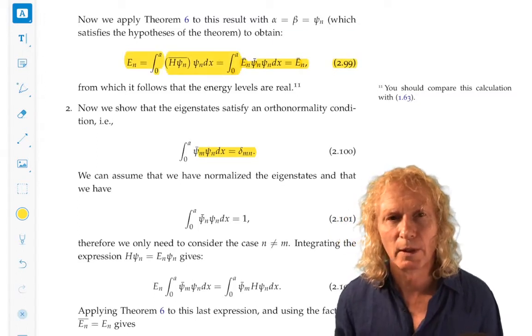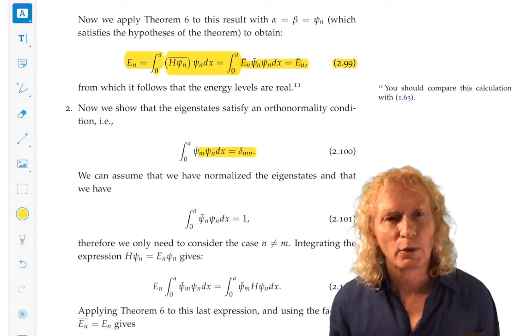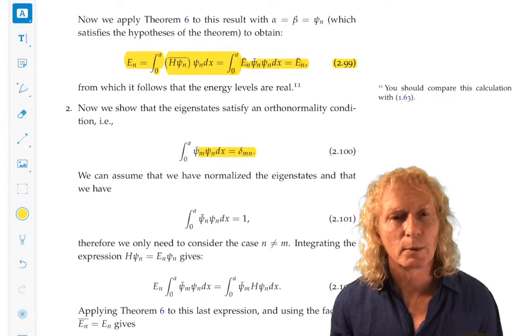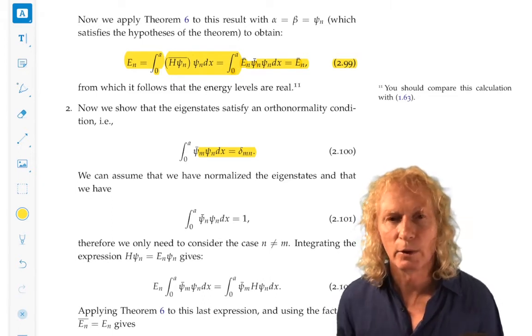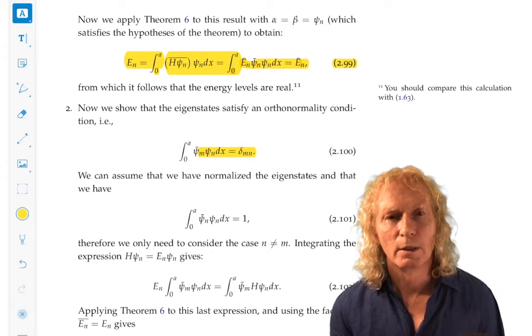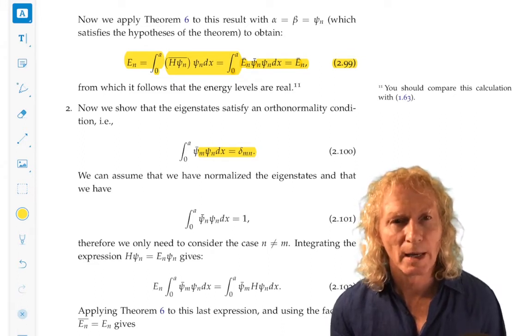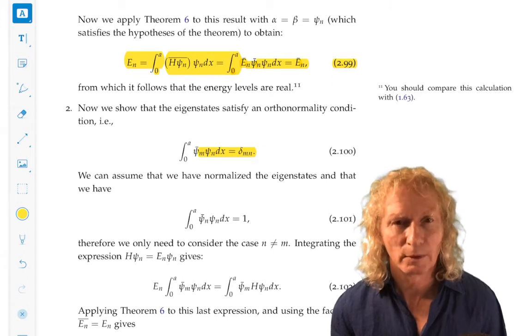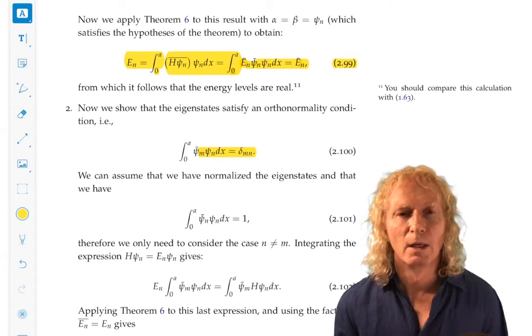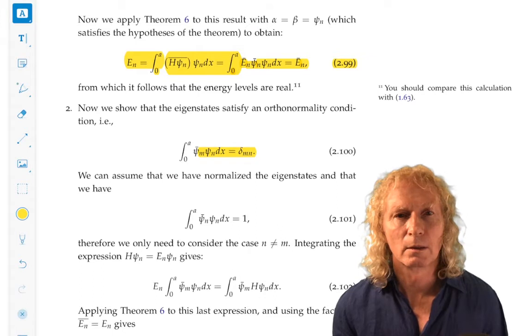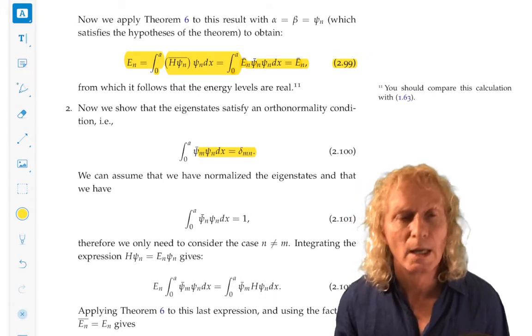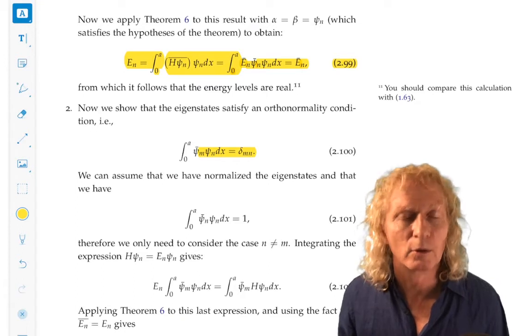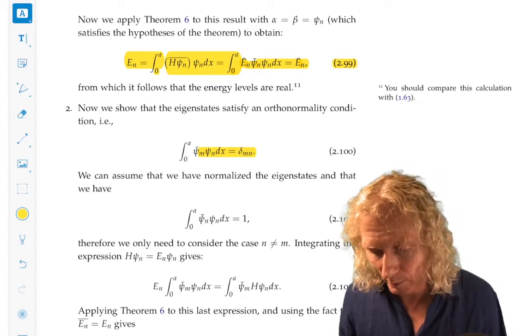Now here's the exercise. In the spectral theorem at the end of chapter one, I had, using Dirac notation, a proof that the eigenvalues of a self-adjoint operator in a finite dimensional complex inner product space, the eigenvalues are real and orthogonal and can be made orthonormal.